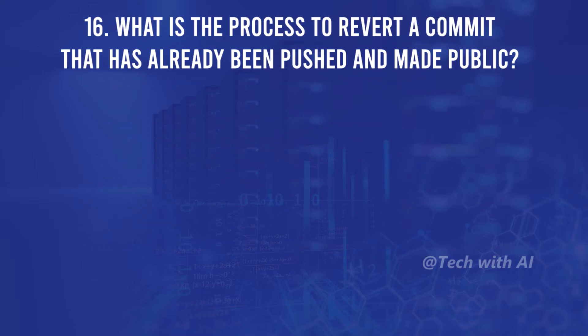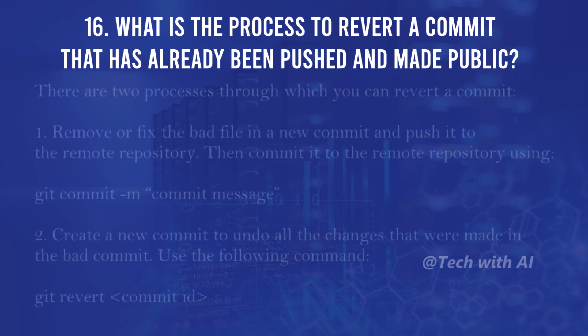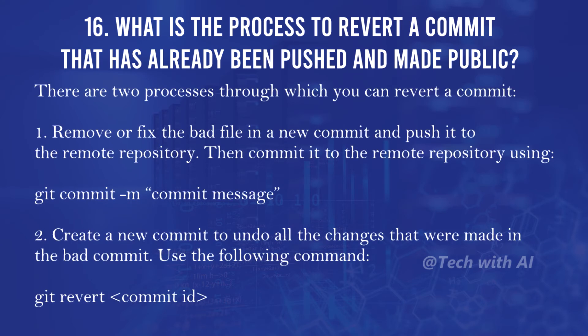What is the process to revert a commit that has already been pushed and made public? There are two processes: first, remove or fix the bad file in a new commit and push it to the remote repository, then commit it using git commit -m "commit message". Second, create a new commit to undo all the changes that were made in the bad commit.